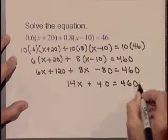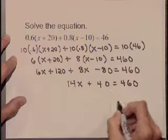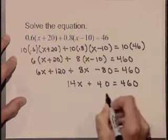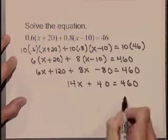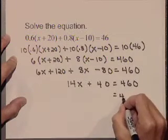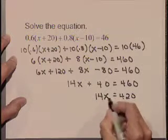Let's begin to isolate our variable by subtracting 40 from both sides. 460 minus 40 is 420. That leaves us with 14x on the left.